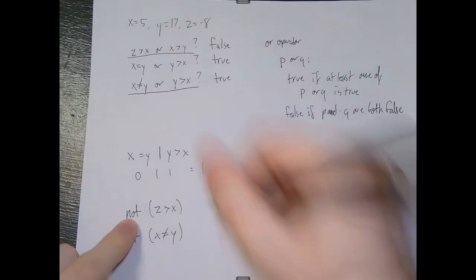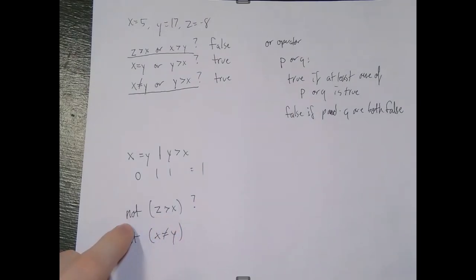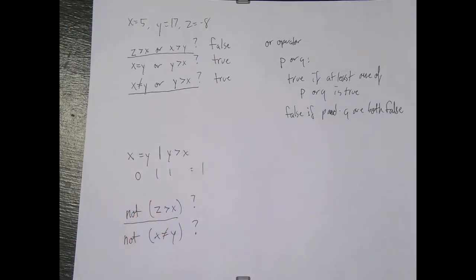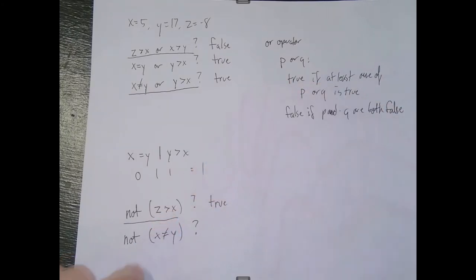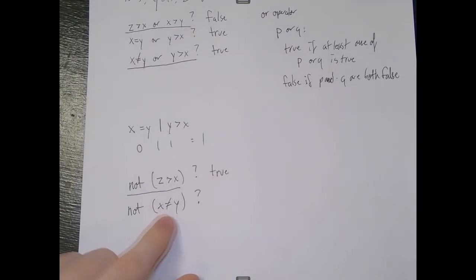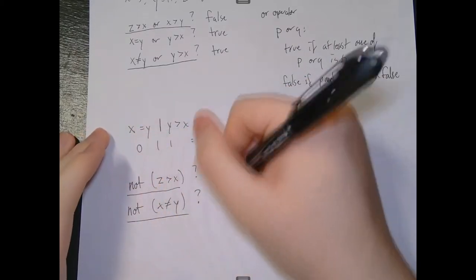For the NOT operator: saying 'not z is greater than x' means is it not true that z is greater than x, or is z > x false? Z > x is a false statement. So we're asking: is it true that z > x is not true? It is true that z > x is false, so this whole statement is true. If we use not on a false statement, we get a true statement. Conversely, not on a true statement like 'x is not equal to y' — which is true — gives us false.